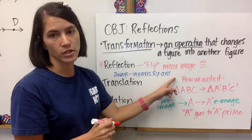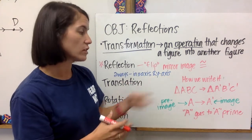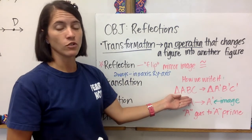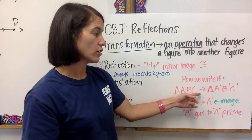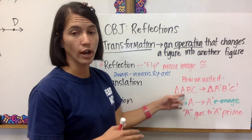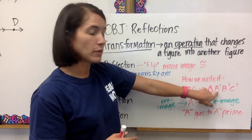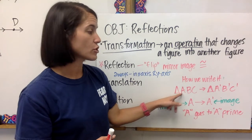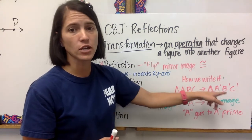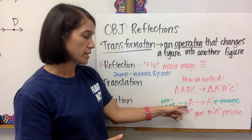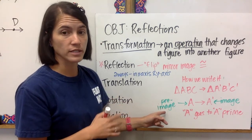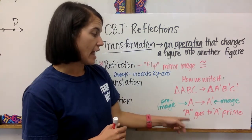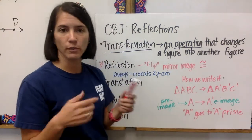Here's just a little information about how we write any kind of transformation. Let's say we start with a triangle ABC. If you're going to transform — whether it's reflection, translation, or any of them — you write an arrow, which means 'goes to': triangle ABC goes to triangle A prime, B prime, and C prime. That means the original point A was transformed and is now A prime, B goes to B prime, C goes to C prime. The first image is the pre-image — the original shape — and then it's the image after it's been transformed.